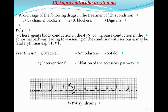In WPW syndrome, we should avoid calcium channel blockers, beta blockers, or digitalis, because these agents block conduction in the AV node and can increase conduction through the accessory pathway. Blocking the AV nodal pathway forces all electrical activity through the accessory pathway, potentially leading to serious and fatal arrhythmias like ventricular fibrillation or ventricular tachycardia. Treatment should use agents affecting both the AV nodal pathway and the accessory pathway, such as amiodarone or sotalol, or by ablation of the accessory pathway.